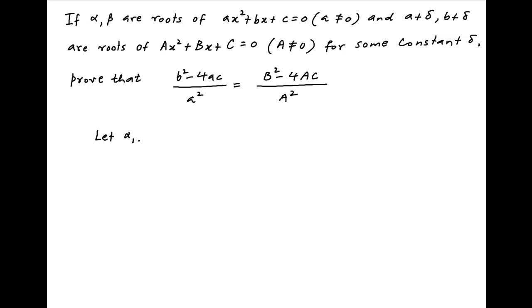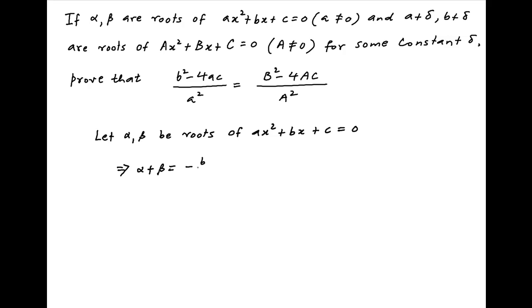Alpha and beta are roots of the quadratic equation ax² + bx + c = 0. Therefore, the sum of the roots alpha plus beta is equal to minus b upon a, and the product of the roots alpha times beta is equal to c upon a.